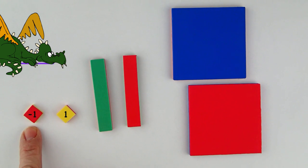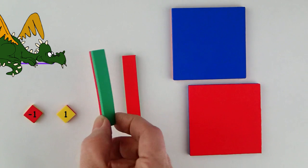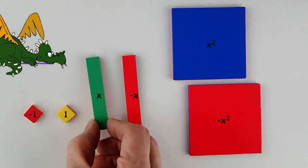The same is true for the other algebra tiles. Each has a red side that represents the negative of the other side.